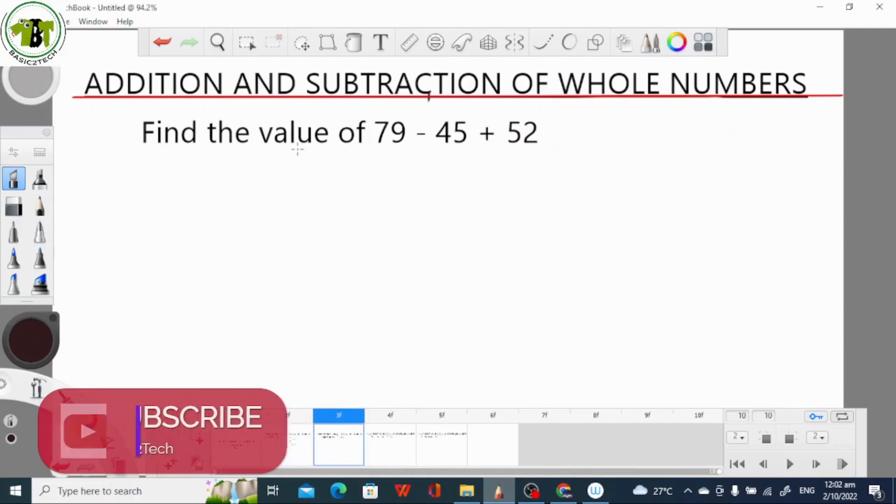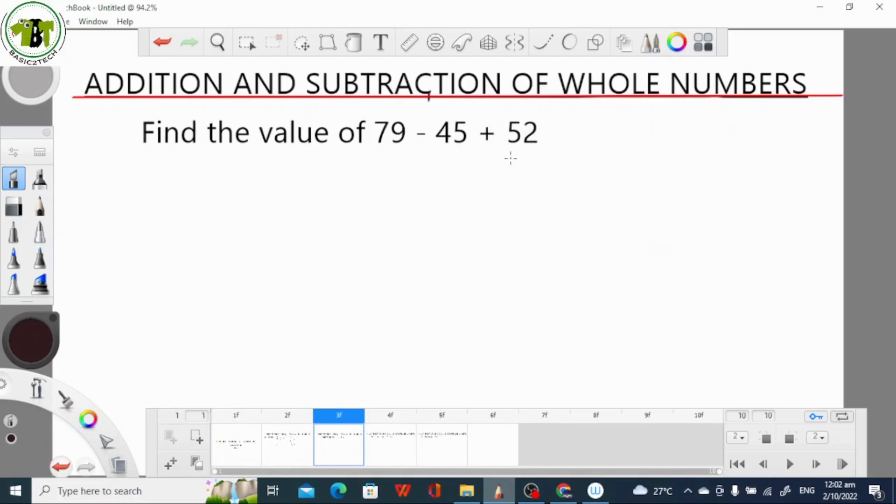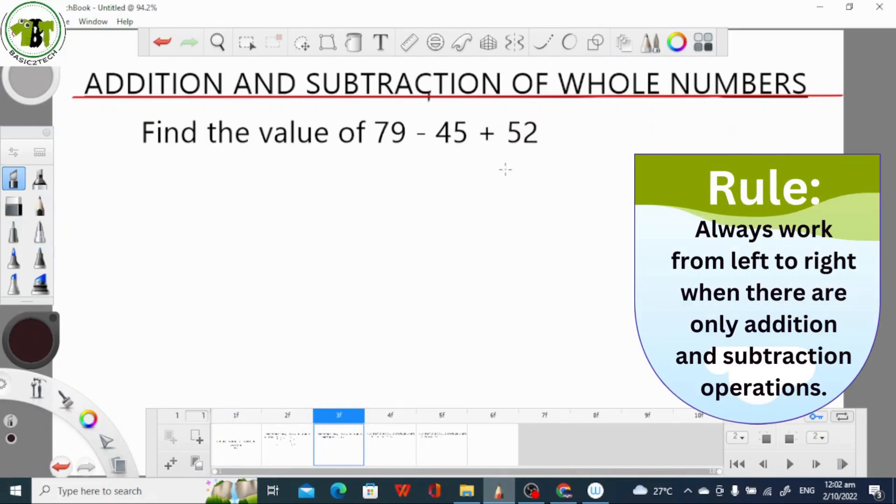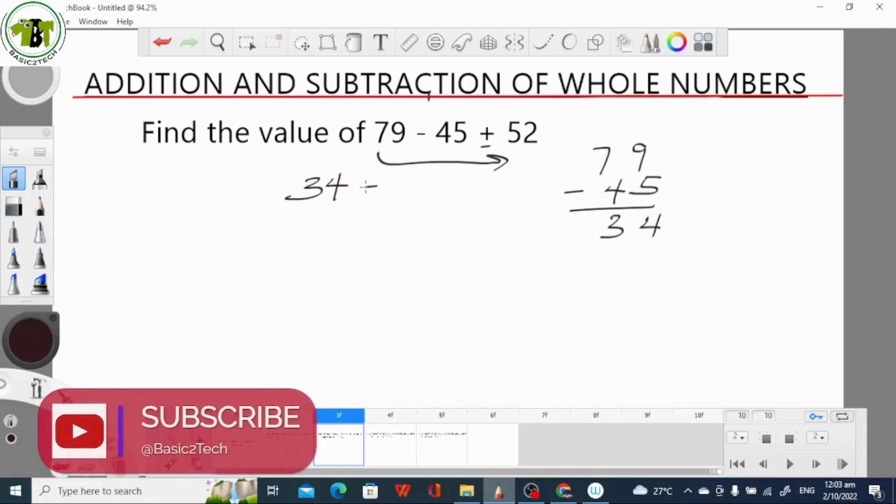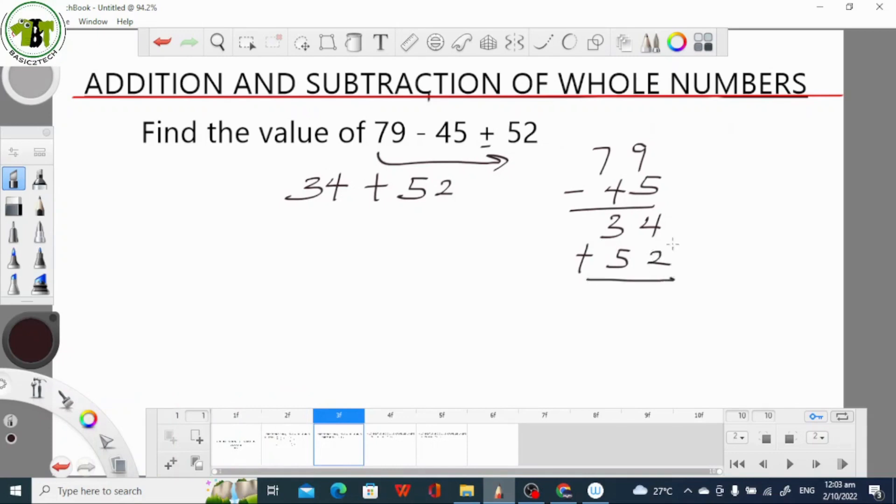Now let's look at our next question. We are asked to find the value of 79 minus 45 plus 52. Again, the rule is the same. We always work from left to right. The first thing is 79 minus 45. 9 minus 5 is 4 and 7 minus 4 is 3. So we have 79 minus 45 is 34. So 34 plus 52. 4 plus 2 is 6 and 3 plus 5 is 8. So 34 plus 52 gives us 86. This is our final answer.